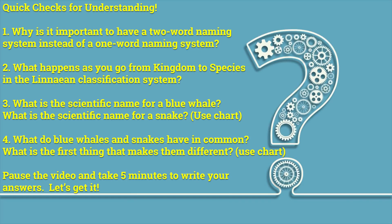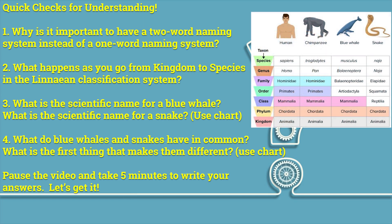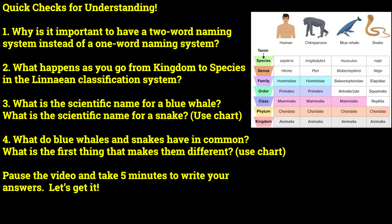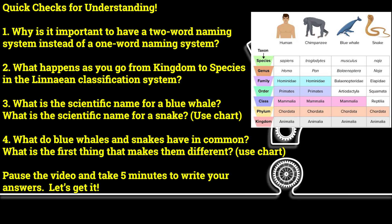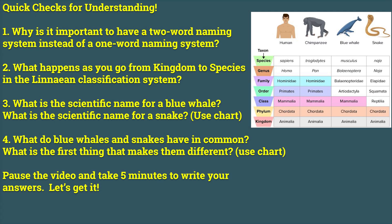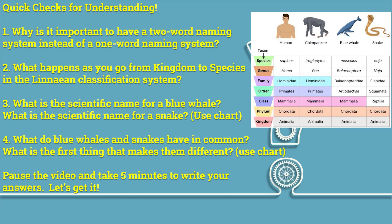Quick checks for understanding. Number one: why is it important to have a two-word naming system instead of a one-word naming system? Number two: what happens as you go from kingdom to species in the Linnaean classification system? Number three: what is the specific name for a blue whale, and what is the specific name for a snake? Number four: what do blue whales and snakes have in common, and what is the first thing that makes them different? Pause the video and take five minutes to write your answers. Let's get it.